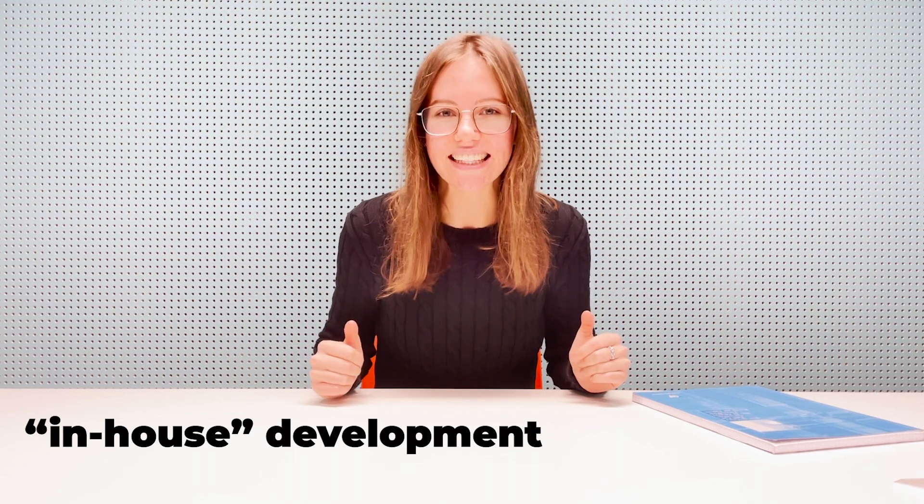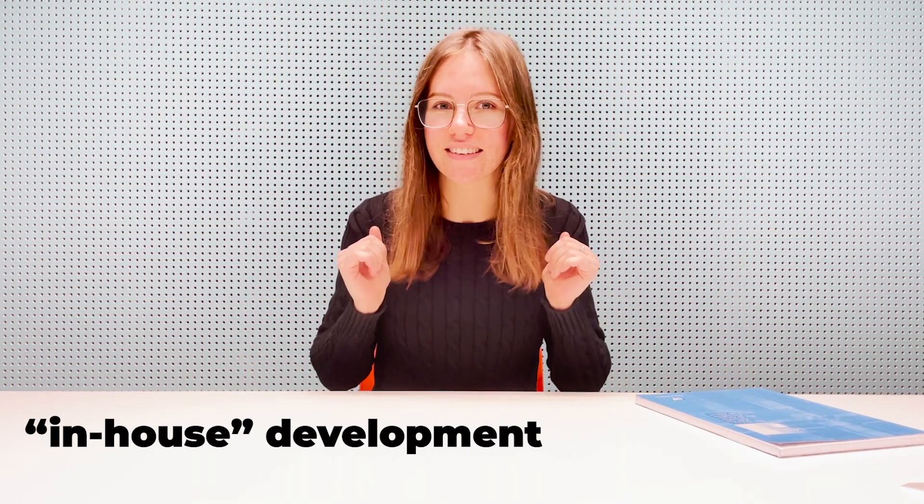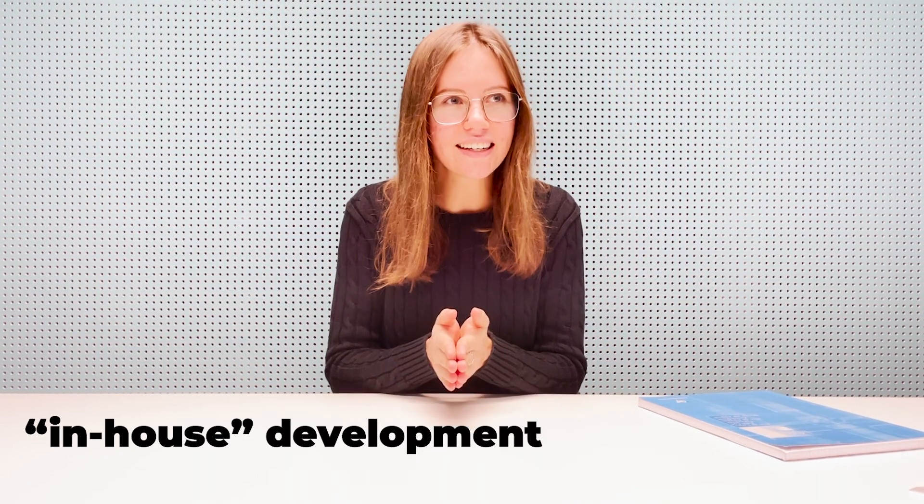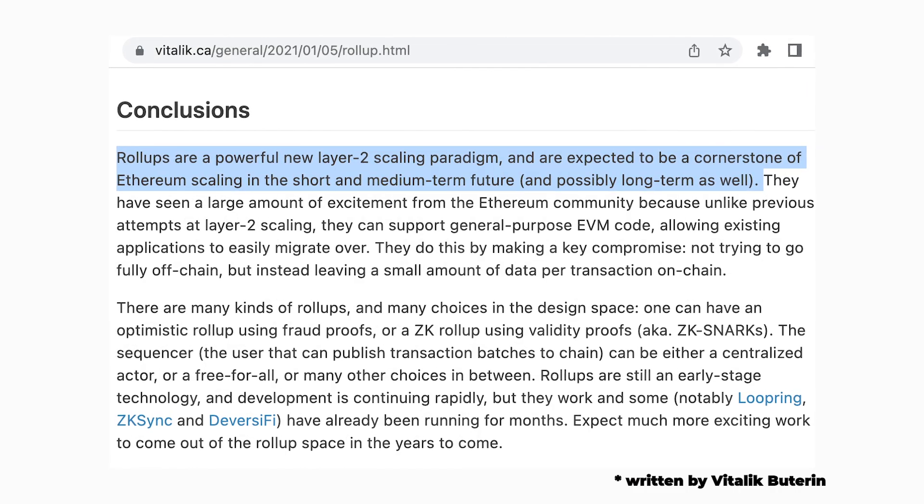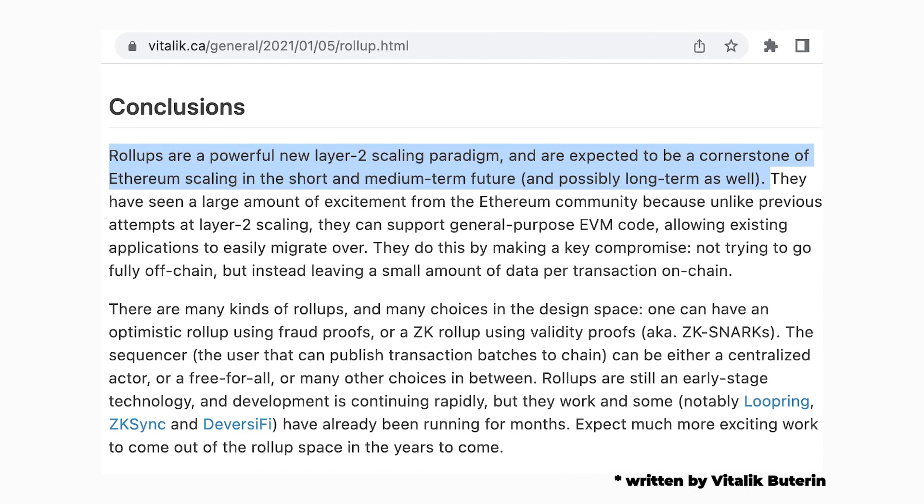This in-house development allows processes to be highly optimized and ensures that products work quickly and reliably. So Loopring could be kind of like Apple on blockchain. ZK Rollup protocols are widely perceived as a secure solution to the problem of high fees on Ethereum.